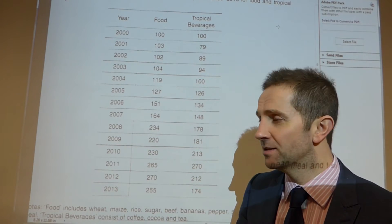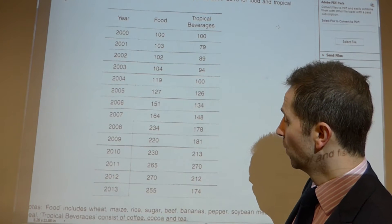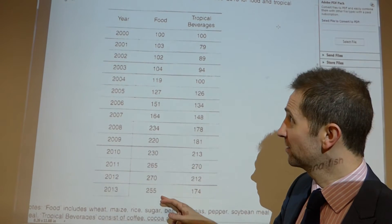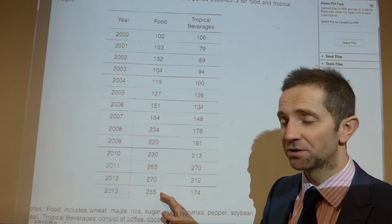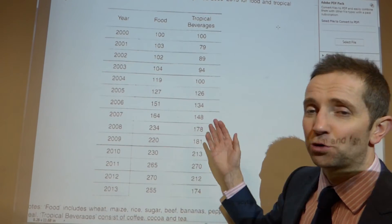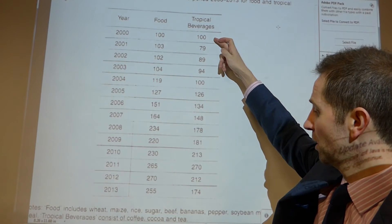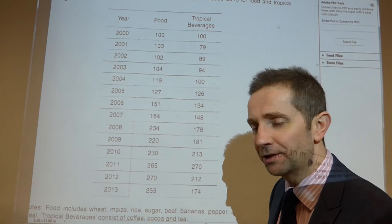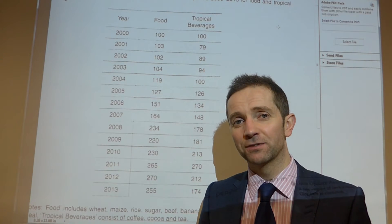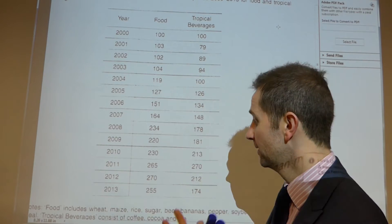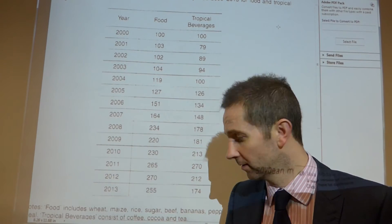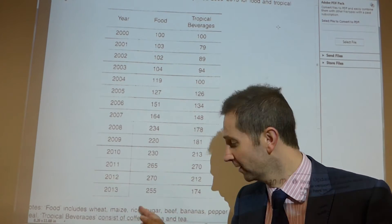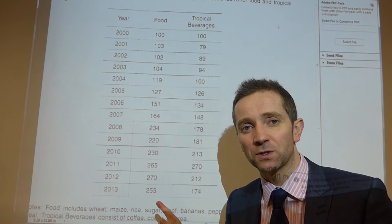A number of candidates simply said things along the lines of: food prices increased over the period 2000 to 2013, from an index of 100 to 255; tropical beverages also increased from 100 to 174. Now whilst that is factually correct, there is no comparison there. In order to get the comparative mark you would need to say, for example, that food prices rose more than tropical beverage prices, because the index went to 255 whereas the tropical beverages index only goes to 174.